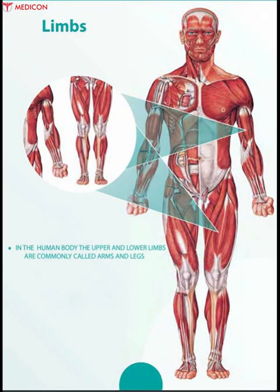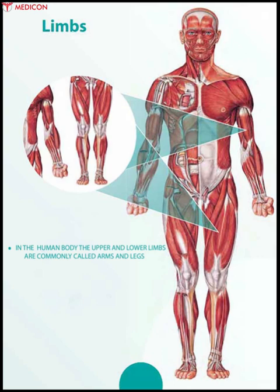Limbs: in the human body, the upper and lower limbs are commonly called the arms and legs. Arms are located between the shoulders and elbows, and include the forearm, wrist, and arm. Nearly 30 bones are present in each upper arm. Lower limbs extend from the hip to the toes, and include the knee, ankle joints, legs, foot, and thighs.